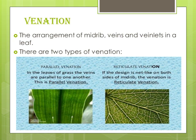In parallel venation, in the leaves of grass — which is a very good example — the veins are parallel to one another. You can see in the diagram that the veins are moving parallel to one another and are not forming any network. Banana is also an example. So these leaves show parallel venation.